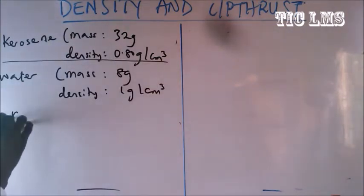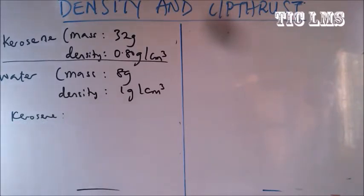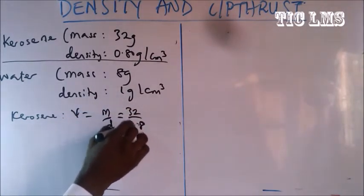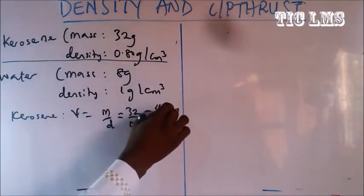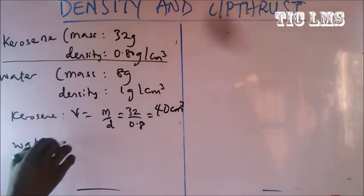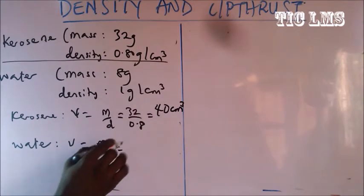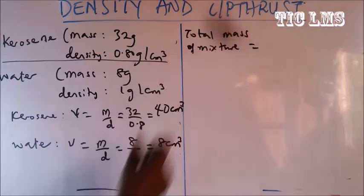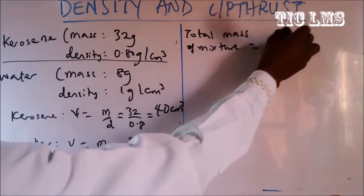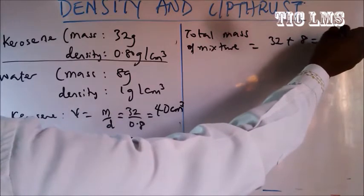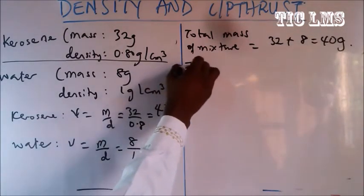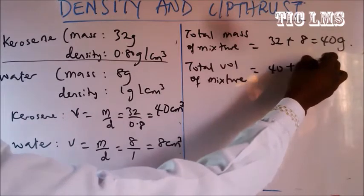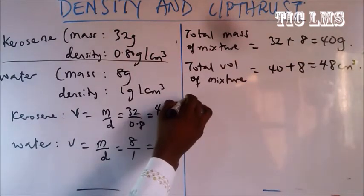We first determine the volume of each component. Volume equals mass over density. For kerosene: 32 divided by 0.8 equals 40 cm cubed. For water: 8 divided by 1 equals 8 cm cubed. Total mass of mixture is 32 plus 8 equals 40 grams. Total volume of mixture is 40 plus 8 equals 48 cm cubed.